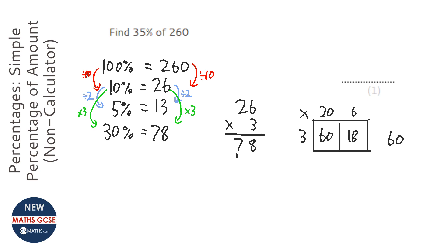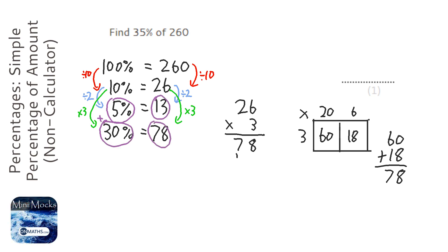Okay, so to get 35%, we need to add the 5 and the 30 together. So we need to add this amount and this amount, and that would give us 35%. So we need to do 13 plus 78. 3 plus 8 is 11, so write 1, and then 1 down here, 7, 8, 9, so it'd be 91. So our answer is going to be 91.